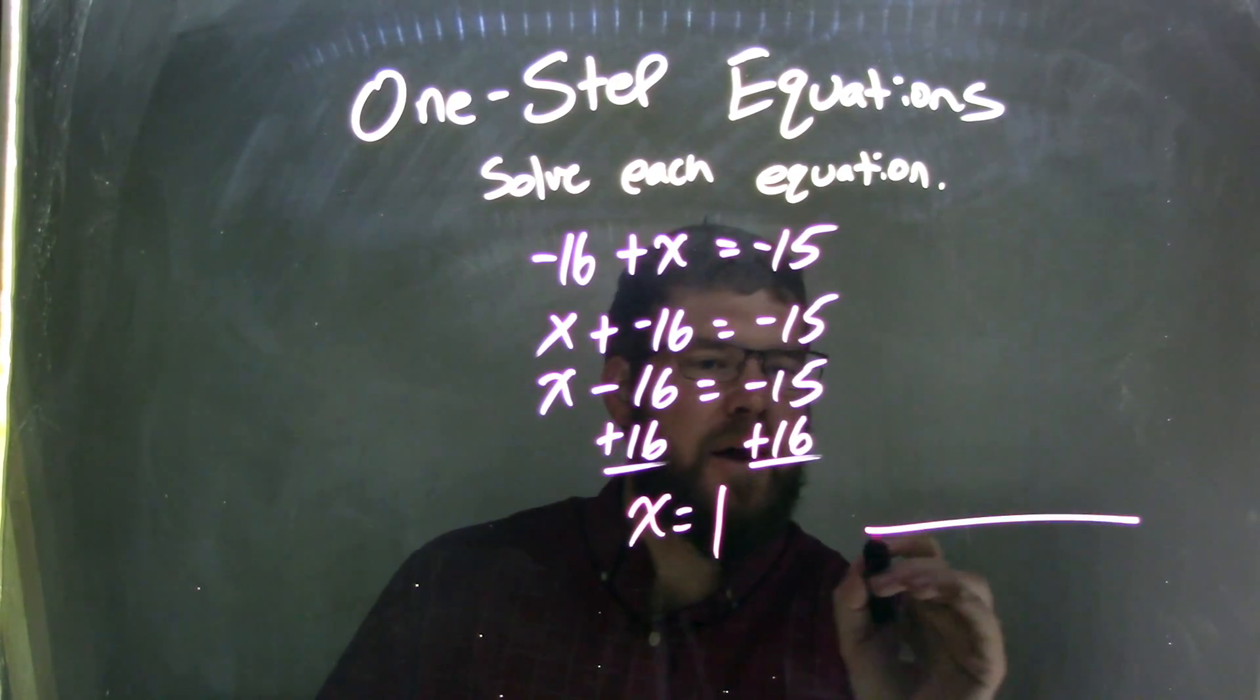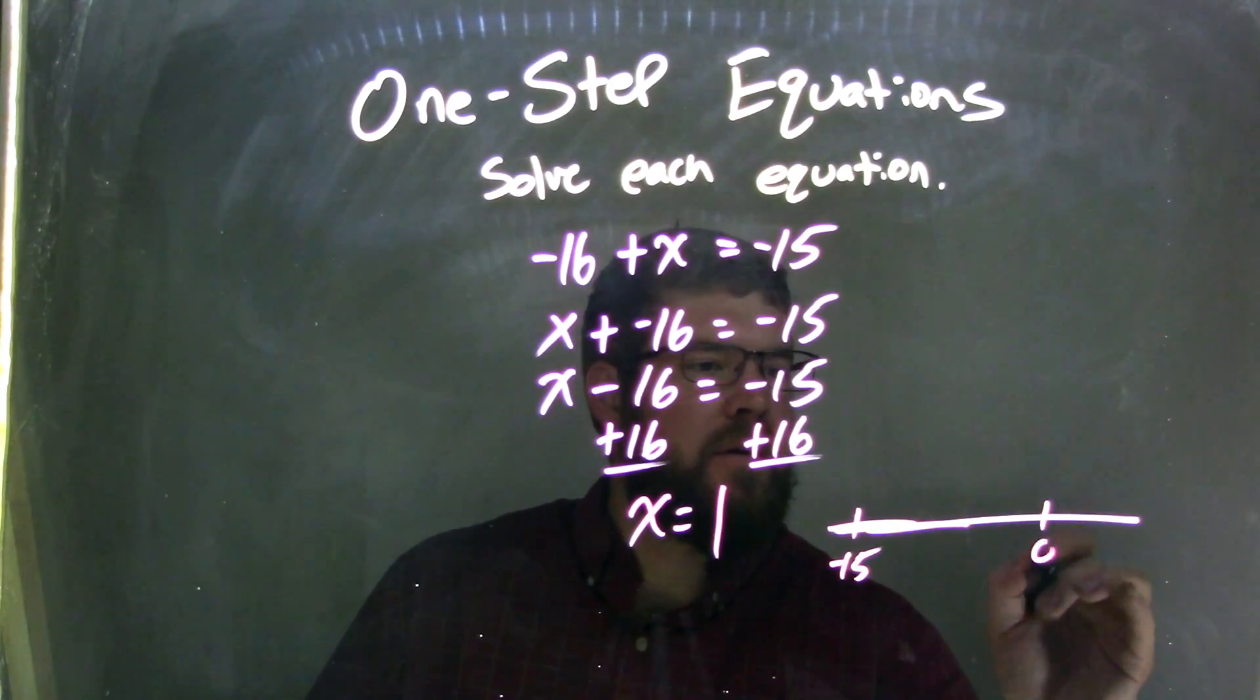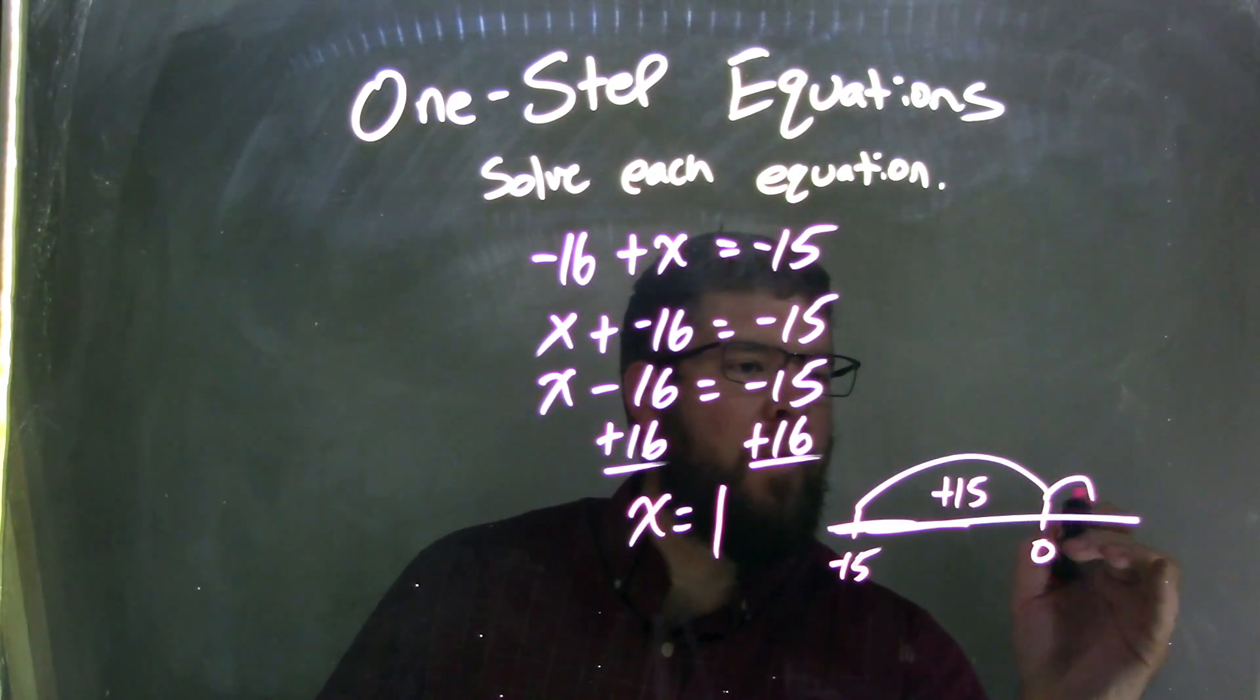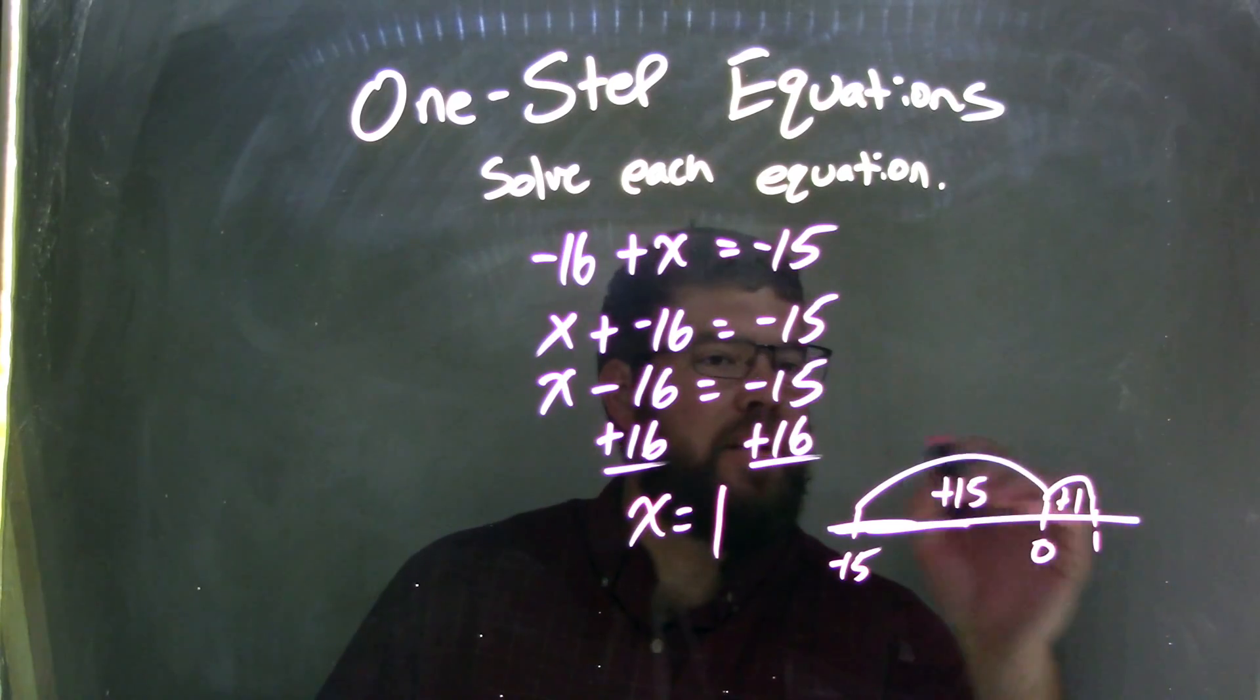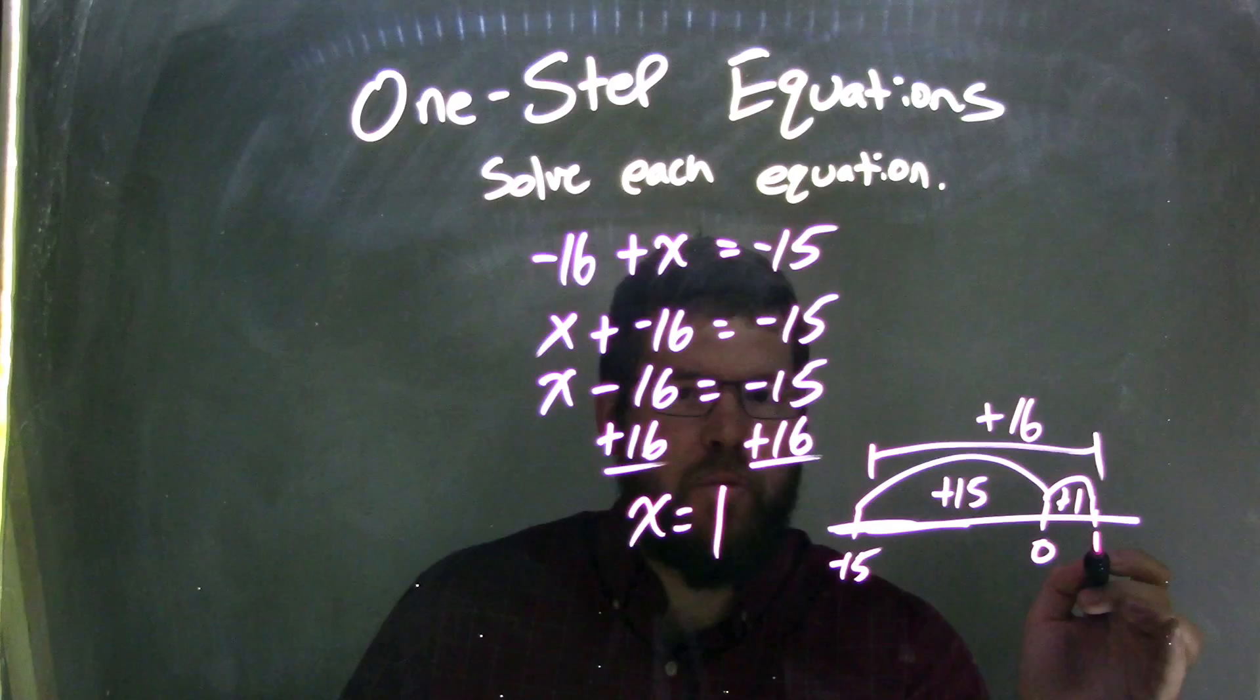Why? Look at the number line here. We start with negative 15. Negative 15, we add 15 units to that. To the right, we get to 0. One more unit plus 1 gets me to 16, right? So, an overall distance of plus 16. So, we ended at 1, a positive 1.